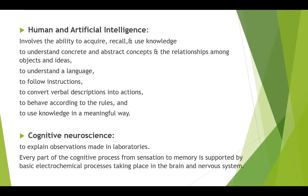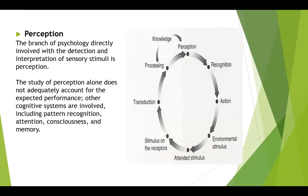Cognitive neuroscience explains observations made in laboratories. Every part of the cognitive process from sensation to memory is supported by basic electrochemical processes in the brain and nervous system. Perception is the branch of psychology directly involved with the detection and interpretation of sensory stimuli. The study of perception alone does not adequately account for expected performance; other cognitive systems such as pattern recognition, attention, consciousness, and memory are also involved.